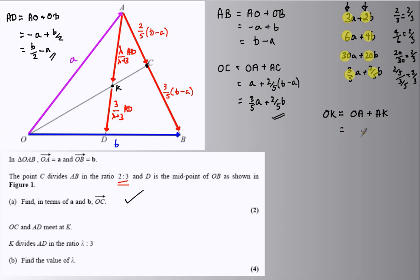which will be OA plus lambda over lambda plus 3, that fraction of AD. And AD, I worked out already over here. So, let me put all this together.